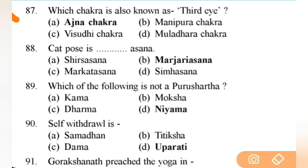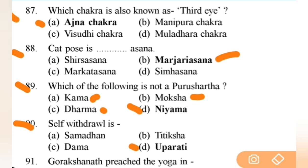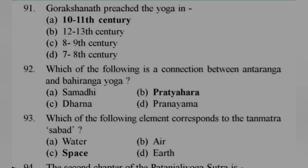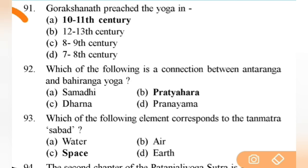Which chakra is also known as the third eye? Right answer is A — Agya Chakra. Next: cat pose is Marjari Asana. Next: which of the following is not a Purushartha? Right answer is D — all the others are Purusharthas: Kama, Moksha, Dharma. Next: self-withdrawal is — right answer is D — Uparati — very important. Next: Gorakhnath preached yoga in the 10th to 11th century — very important question.